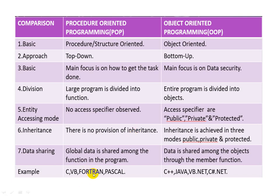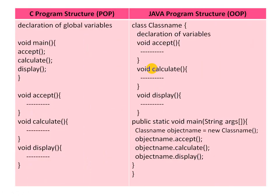C, Visual Basic, Fortran, and Pascal are some examples of procedure oriented programming, whereas C++, Java, and VB.net are some examples of object oriented programming. This is an important topic — the difference between procedural oriented programming and object oriented programming. You can pause the video and write down the notes. Next, let us see the structure of a procedural oriented program and an object oriented program.